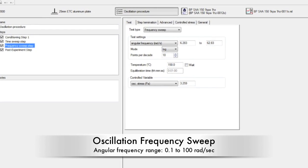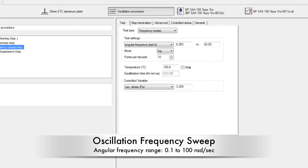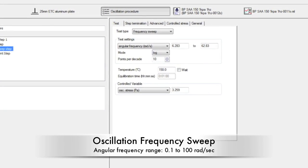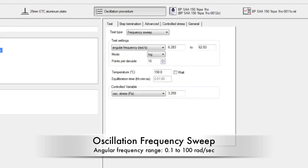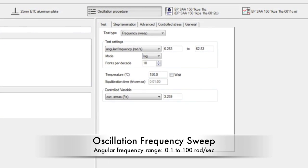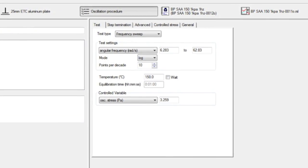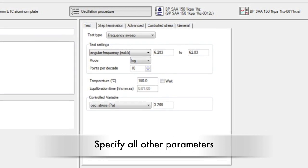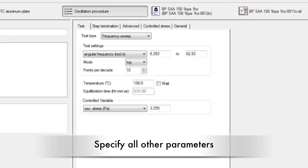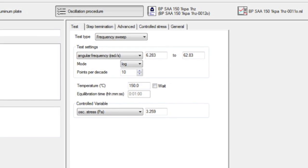If you are looking at the effect the frequency has in the shear moduli, add an oscillation frequency sweep. Under test, indicate the range of angular frequency, which is typically 0.1 to 100 radians per second. Specify log mode and how many points per decade, which is usually 10. Also enter your initial temperature and if you want the variable to be controlled by stress or strain.